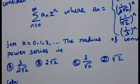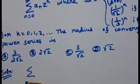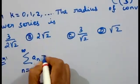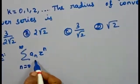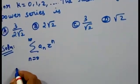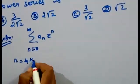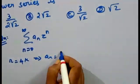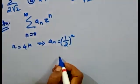Now we will look at the solution. We define summation n equal to 0 to infinity a_n times z^n and will find the radius of convergence for a_n in four cases. First case: n equal to 4k. When n equals 4k, a_n equals (1/2)^n. Now we will calculate the radius of convergence.